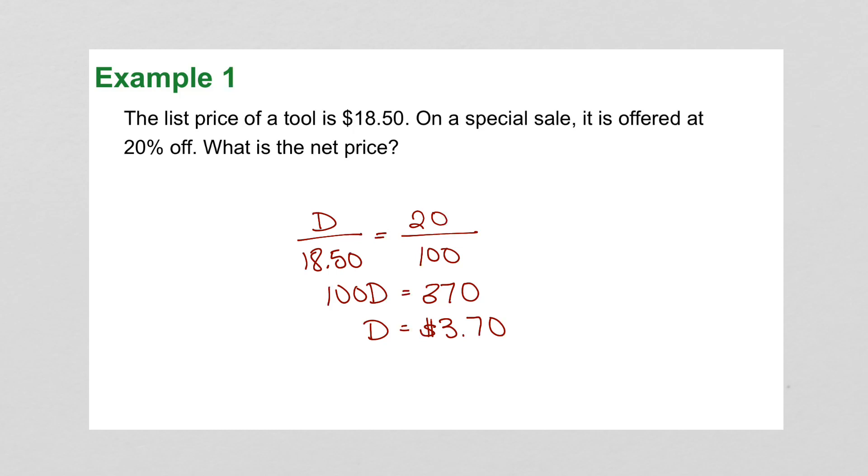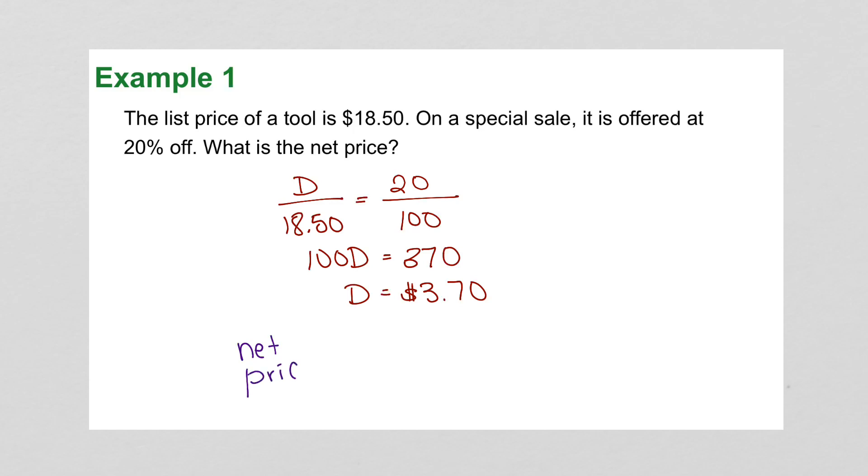Now, don't think that that is now the cost of the tool. That would be nice, right? But no, that is just the discount, what was taken off. So, the net price is the original price minus the discounted price. That will be $14.80.